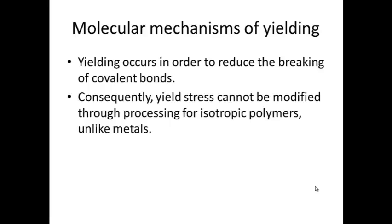Basically, in polymers, yielding occurs so that the covalent bonds don't have to be broken. It would require more energy to break the covalent bonds than it does to break the weaker van der Waals bonds and slide the chains past each other. Consequently, the yield stress cannot be modified through processing of isotropic polymers, unlike metals — so the yield stress is difficult to change in polymers.